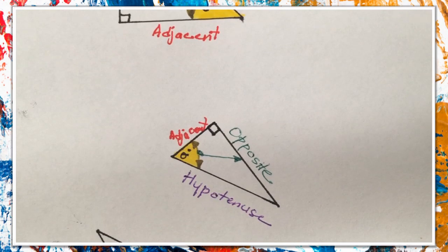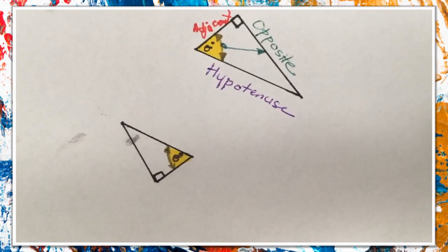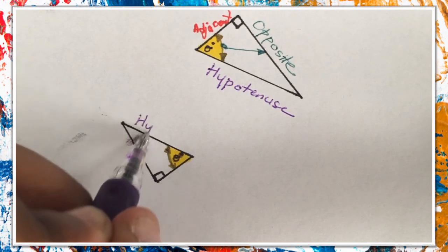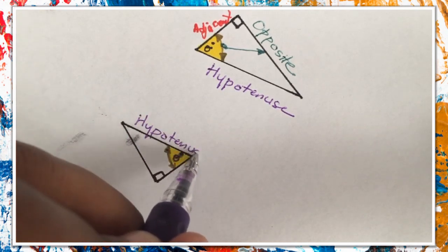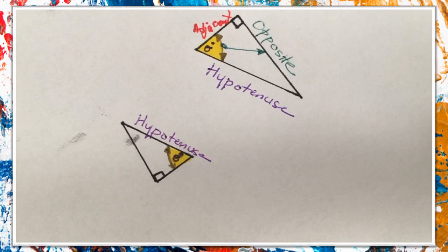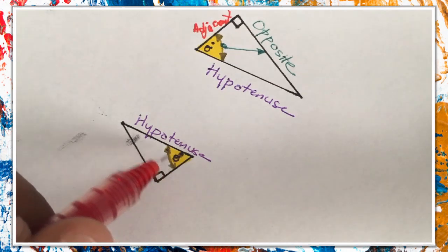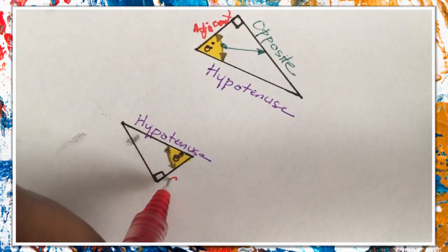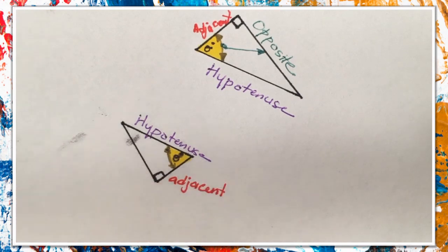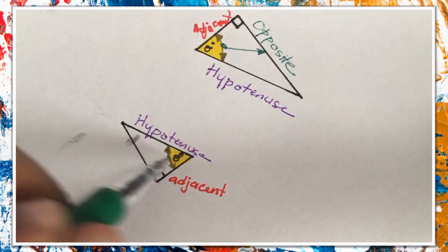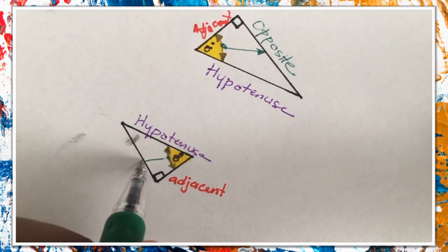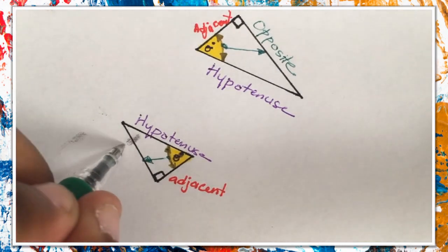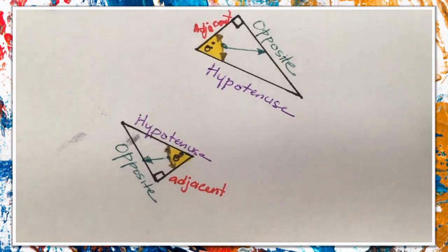So far so good. Let's look at the last one. The angle is formed between the hypotenuse and the adjacent, so if this is the angle and this is the hypotenuse, then this must be the adjacent. And the last line left must be the opposite — let's prove it: find the angle, draw a straight line across, and this touches the opposite. So this line is the opposite. Can you try these now?